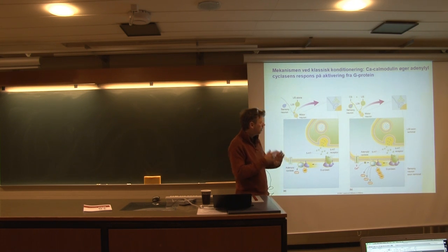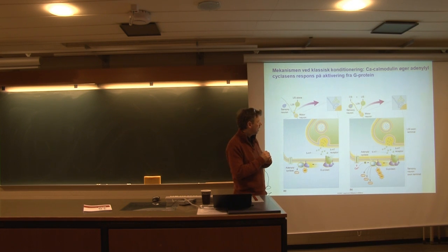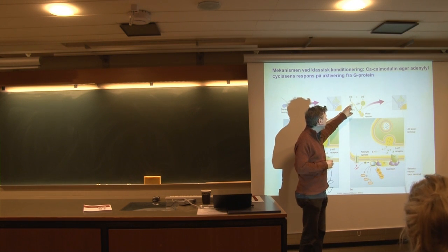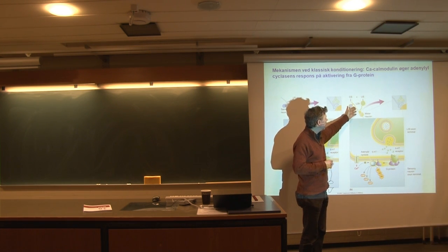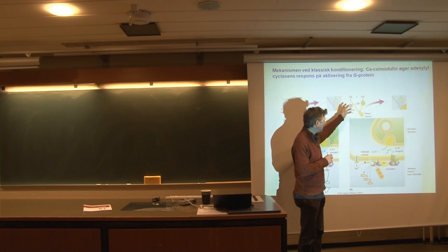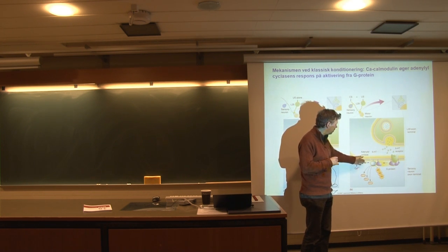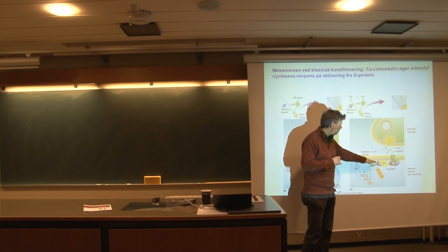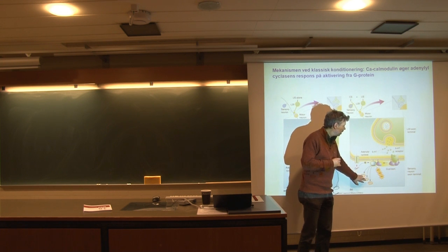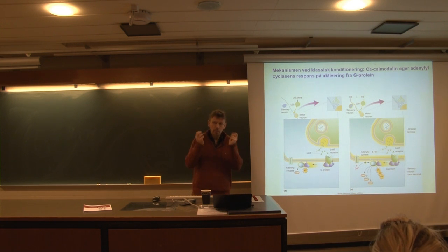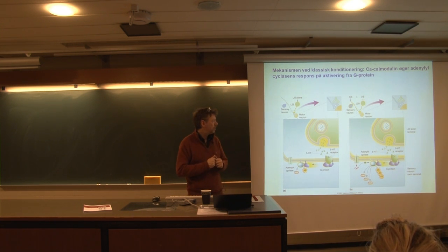Now, what happens if you activate both of these together is that you have a situation where you have the sensory neuron being activated a little bit after the unconditioned stimulus, as shown before, which means that you actually have calcium inside the motor neuron and that calcium can now bind to the adenylyl cyclase and that leads to release of much more cyclic AMP. So the signaling becomes much more efficient if you activate these two together.